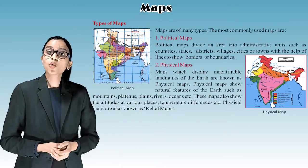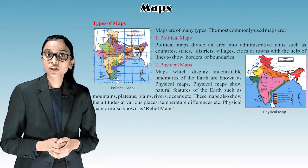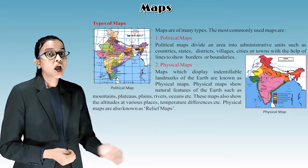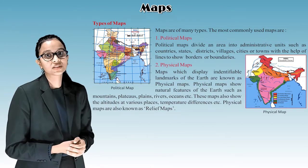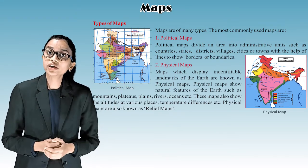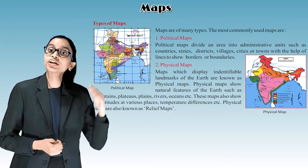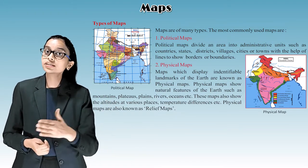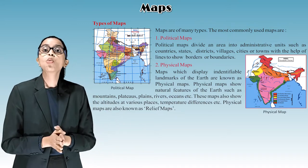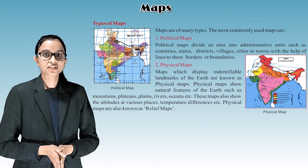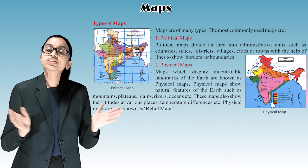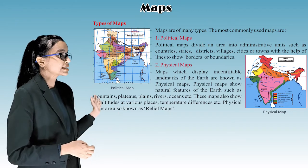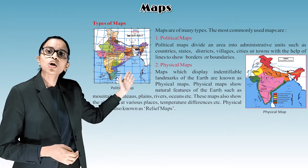Maps are of many types. The most commonly used maps are: The first one is political map, as you've seen in the picture. See how the political map looks. Now, political maps divide an area into administrative units such as country, state, districts, villages, cities or towns with the help of lines to show borders or boundaries.